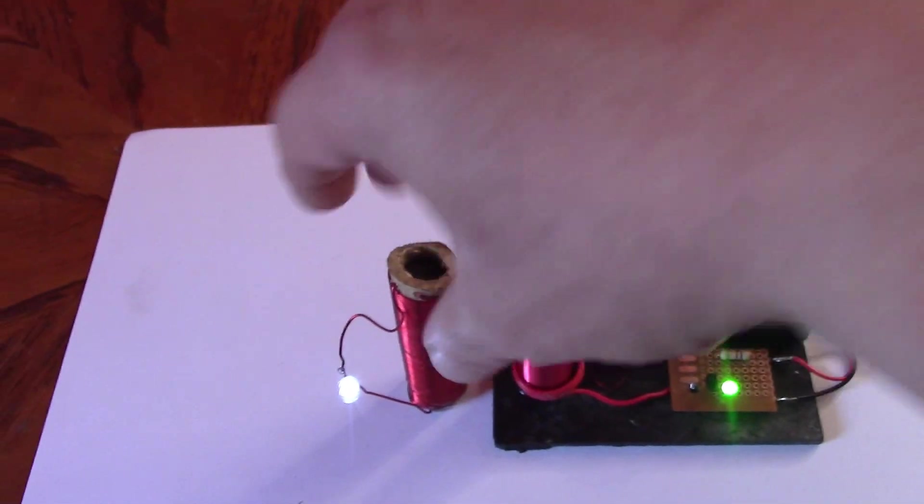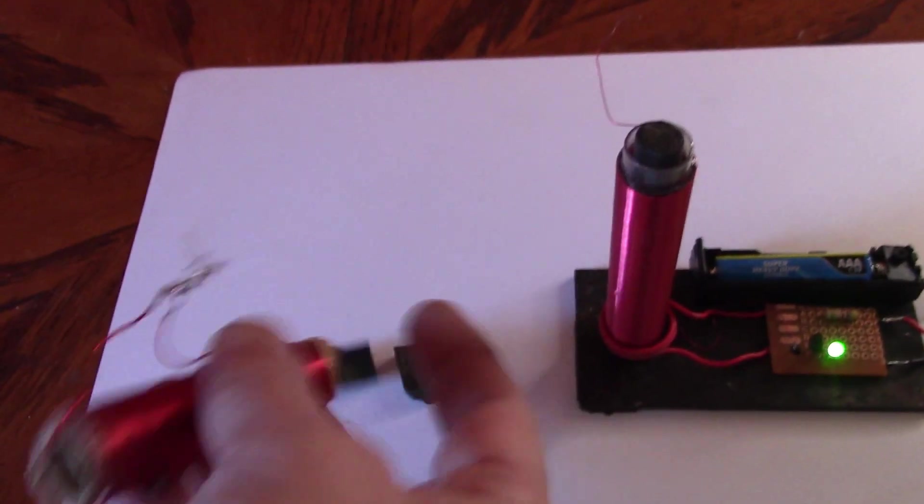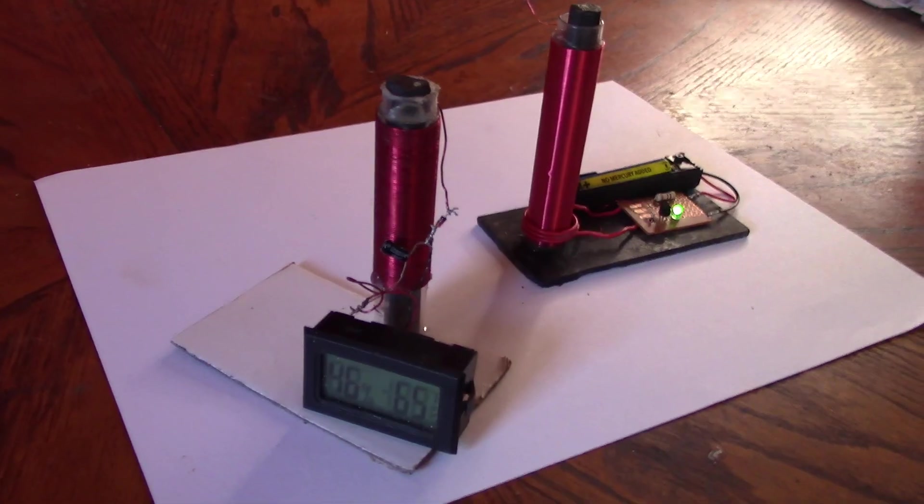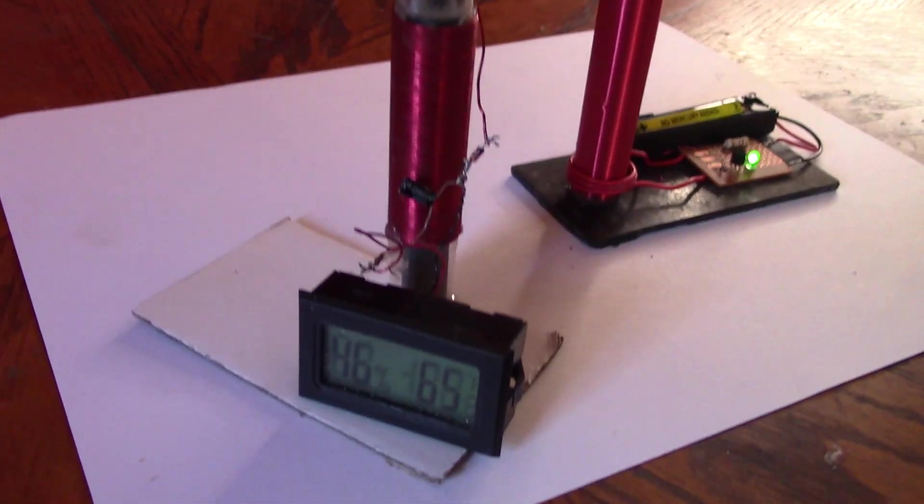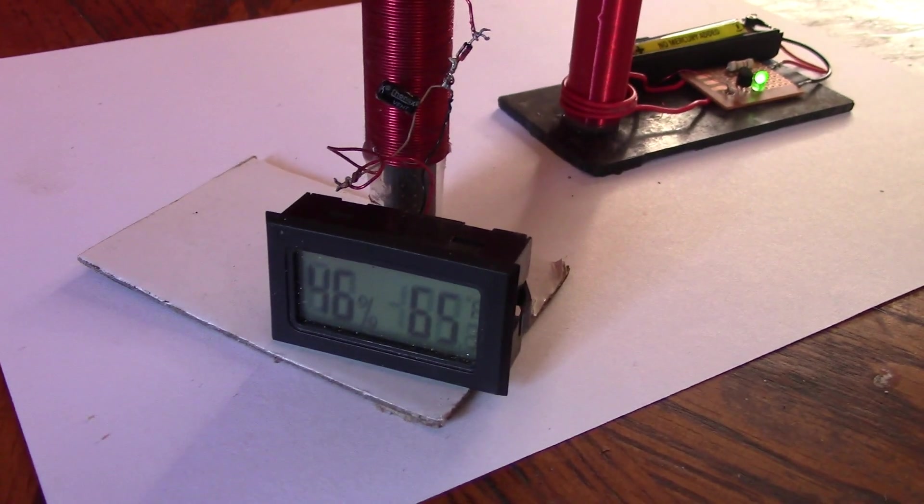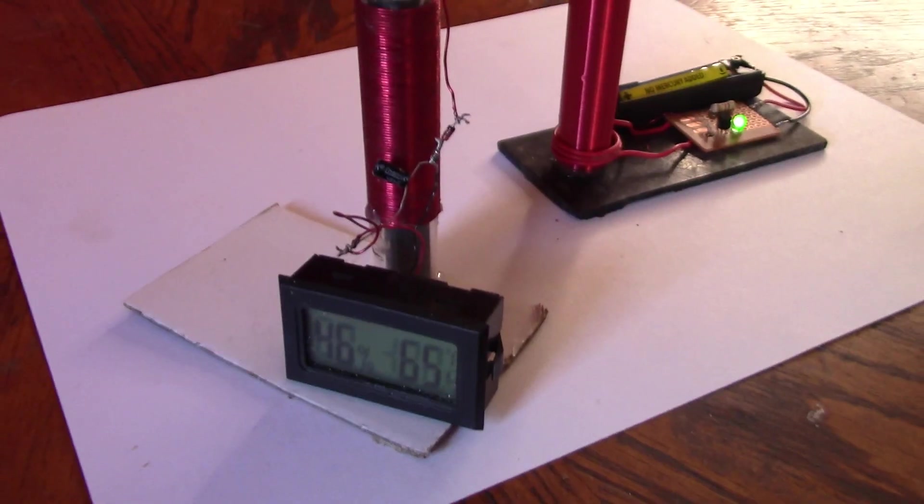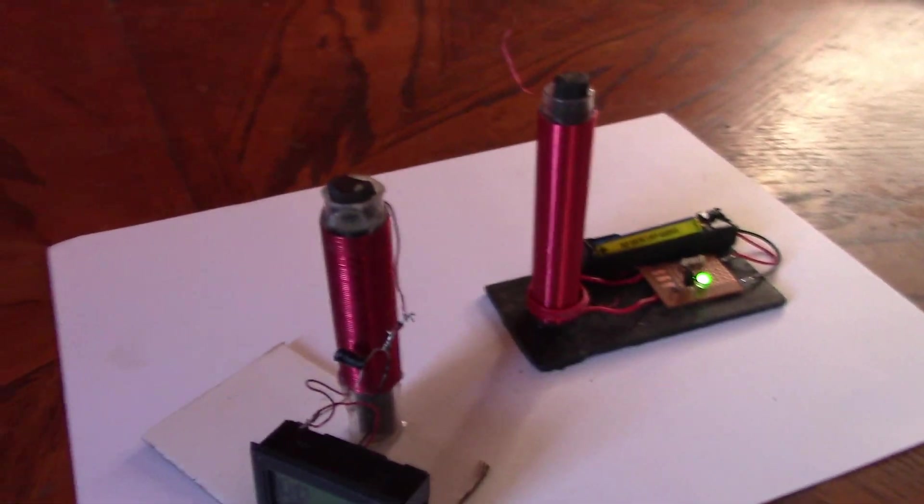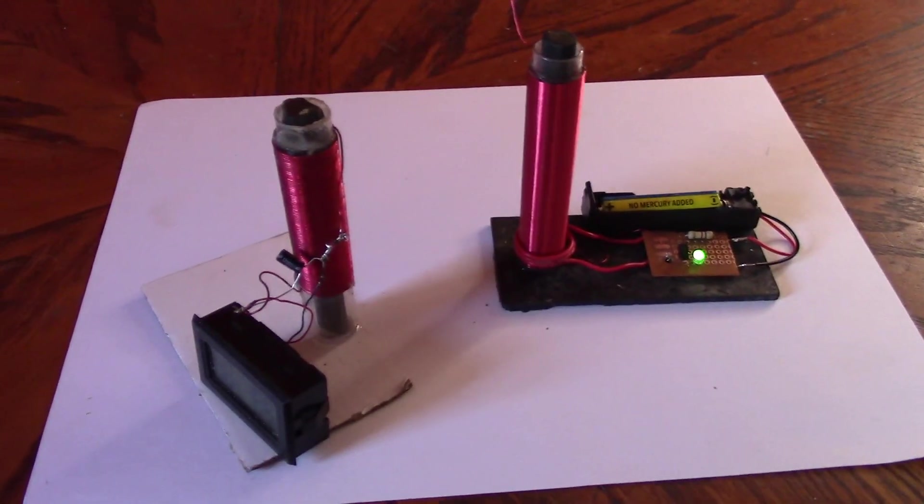Anyway, next thing, and just to say, this has got little pieces in from the smashed up transformer from earlier. This here is a temperature and humidity sensor. So we're not just lighting lights all the time from wireless electricity. And that works great, showing 65 degrees Fahrenheit there, 46% humidity, wirelessly.